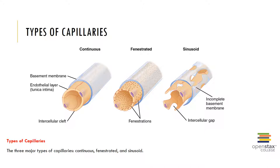Sinusoidal capillaries are the least common of the three types. These are leaky capillaries because tight junctions are rare and intracellular clefts are abundant. They are commonly found in areas where cells must leave circulation and move to the tissues, like bone marrow, liver, and lymph organs. Kupffer cells are a specialized phagocytic cell found in the sinusoidal capillaries of the liver; they act as macrophages that extend into the lumen of the capillary to capture prey.